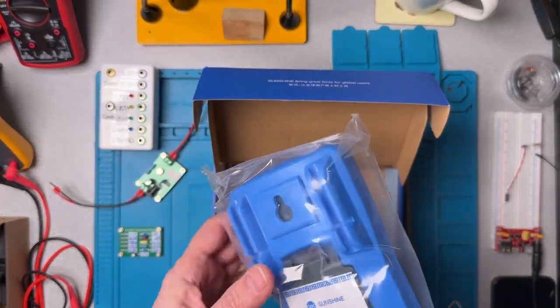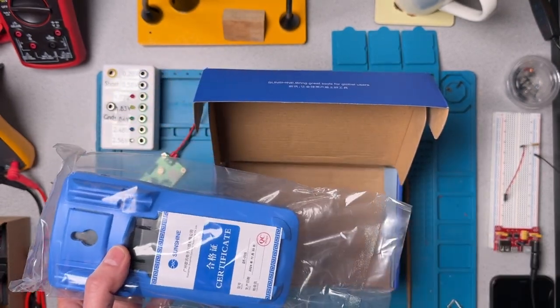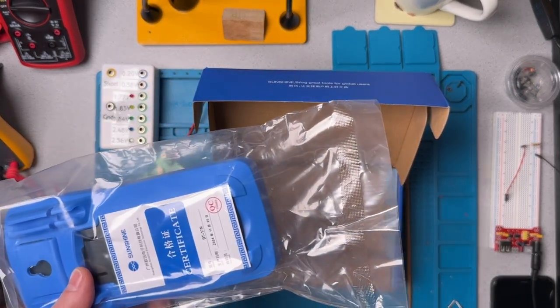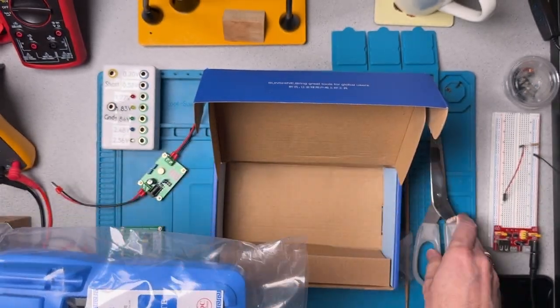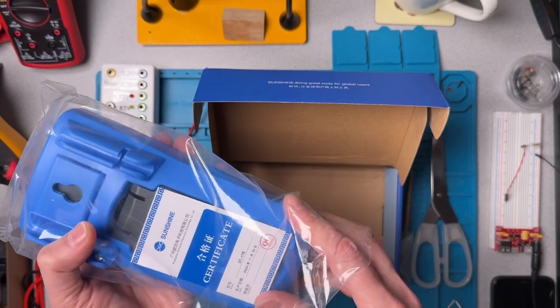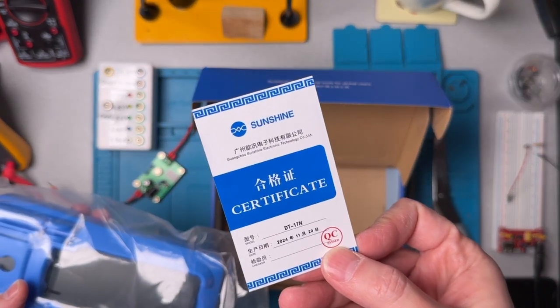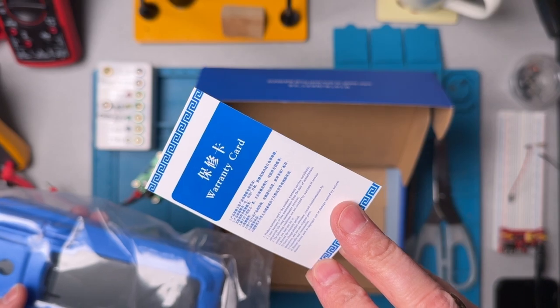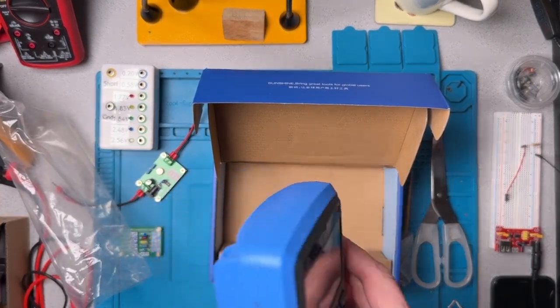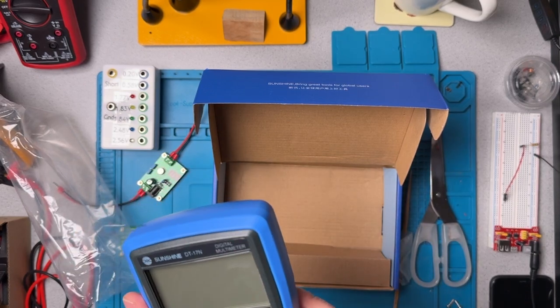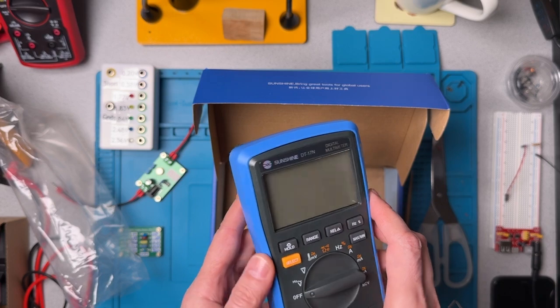So we've got the meter itself in a plastic bag that I'm going to need to cut open. So that's a new one. I guess that ensures that we know for sure that it's the first time. And there's a quality certificate from Sunshine and a warranty card. So that's also a little different. And the meter itself, it's fairly lightweight. Nothing unusual there.